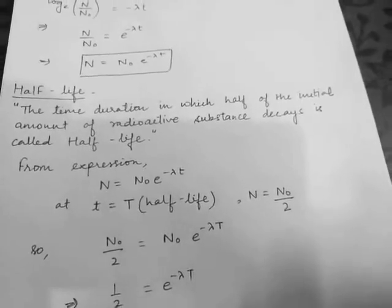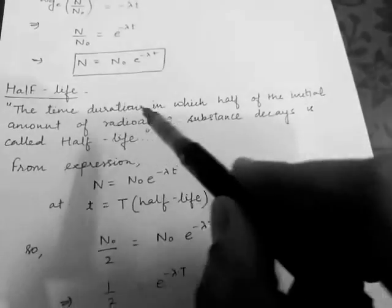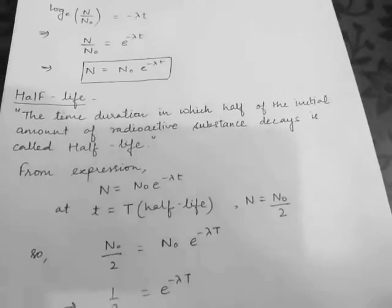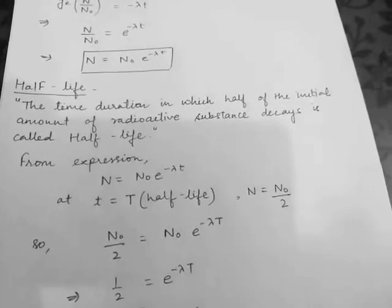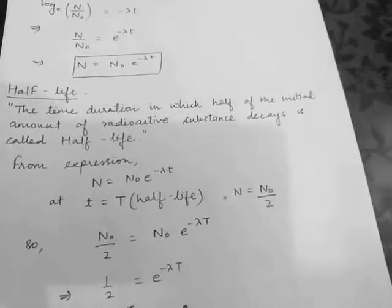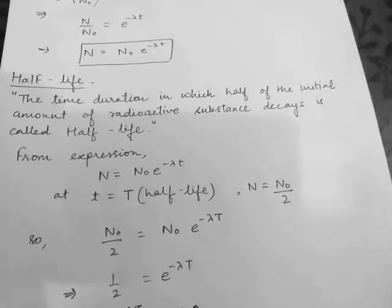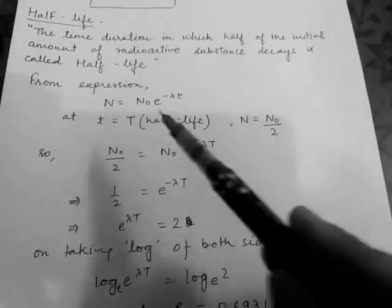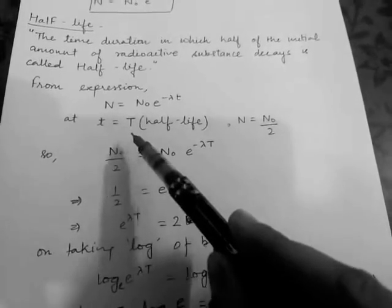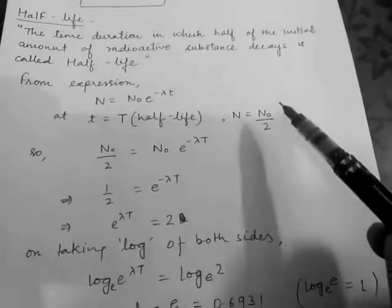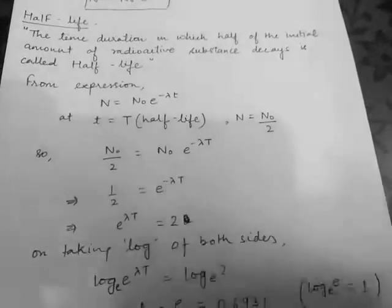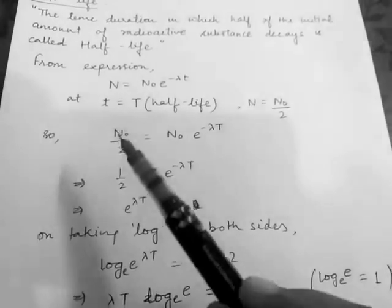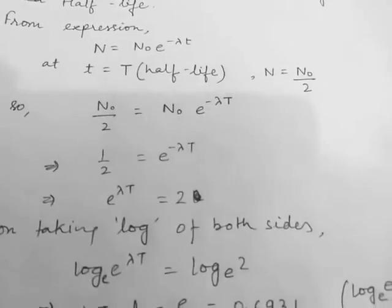The next topic is half-life. The time duration in which half of the initial amount of radioactive substance decays is called half-life. For example, if we have 1000 radioactive atoms, the time in which 500 atoms convert into another substance is the half-life. Using N = N₀ e^(−λt), at t equal to capital T (half-life), the remaining amount must be N₀/2. So N₀/2 equals N₀ e^(−λT), and the N₀ terms cancel to give 1/2 equals e^(−λT).